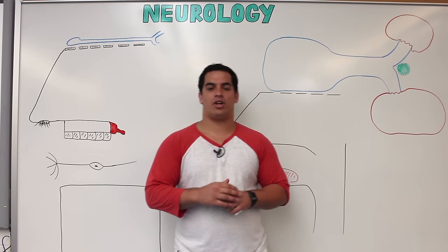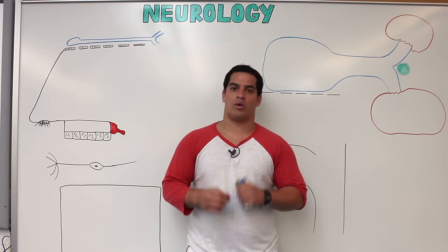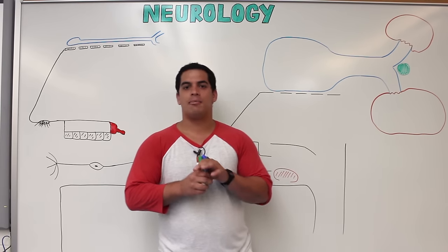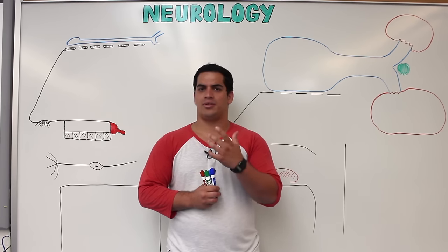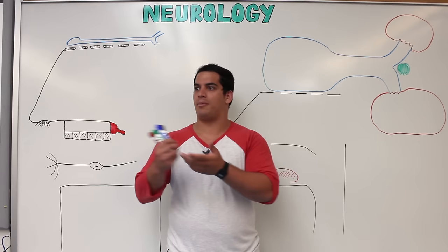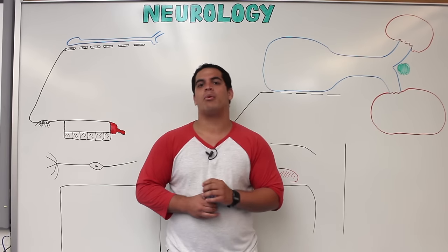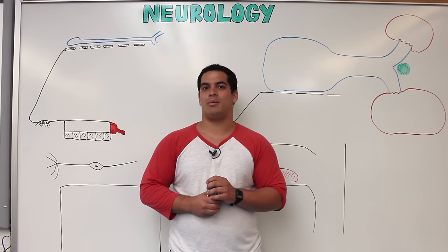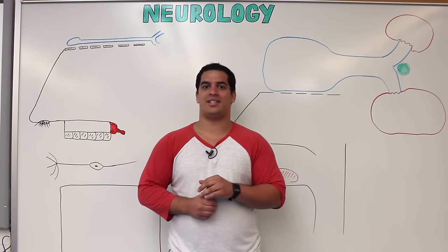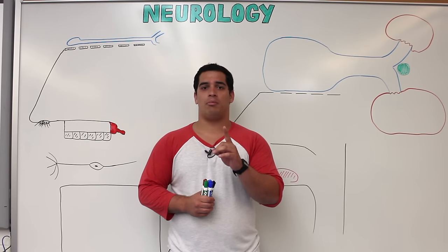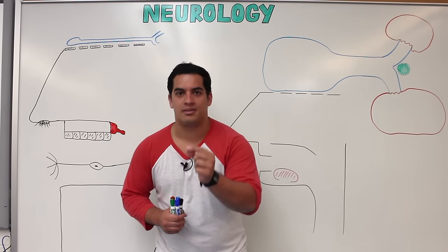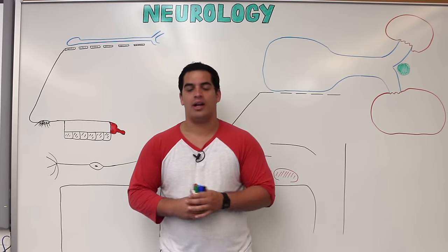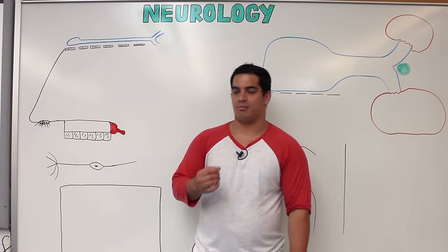In this video we're going to talk about cranial nerve one, the olfactory nerve. This is an important nerve because smell has many important concepts — not only for the ability to smell things, but also because it's directly related to taste. Taste is actually 80% smell, and we'll talk about that when we get to the gustatory pathway.